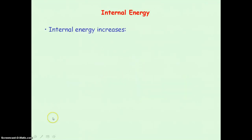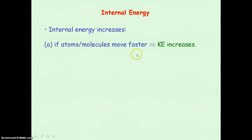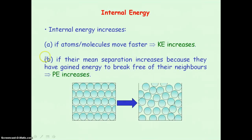There are two ways in which we can increase the internal energy of a system: either by increasing the kinetic energy of the atoms or molecules, or by increasing the potential energy of the atoms or molecules. We can increase the potential energy by increasing the mean distance of separation between the atoms and molecules.